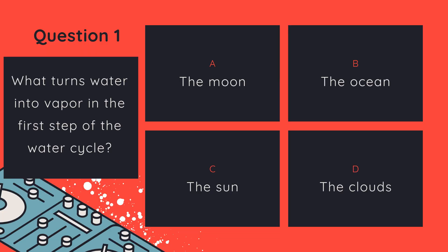Now, let's see how well you followed the water cycle story. Question number one: What turns water into vapor in the first step of the water cycle? A. The moon. B. The ocean. C. The sun. D. The clouds.